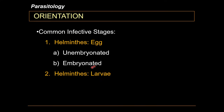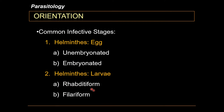Some helminths infect humans through their larvae. There are two major larval forms: the rhabditiform larvae, which is the feeding form, and the filariform larvae, which is the aggressive infective form. In most cases, the filariform larvae is the infective stage. Notably, some helminth genera can infect humans with both ova and larvae.